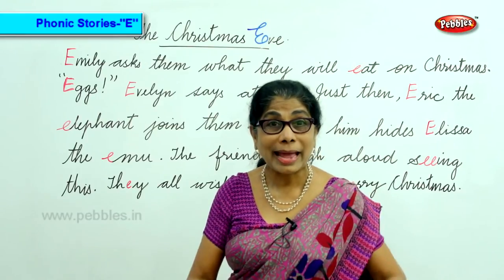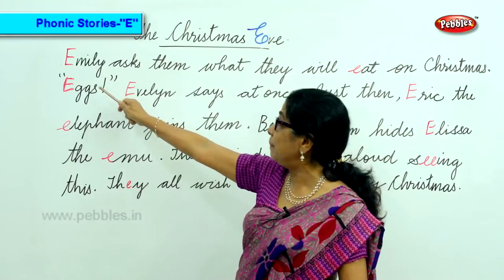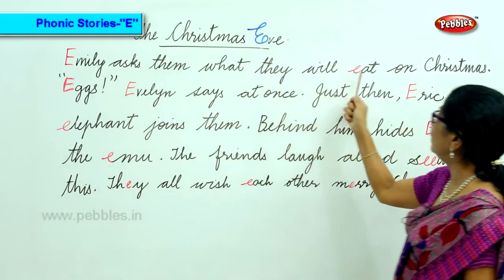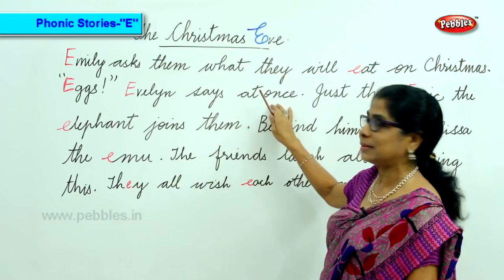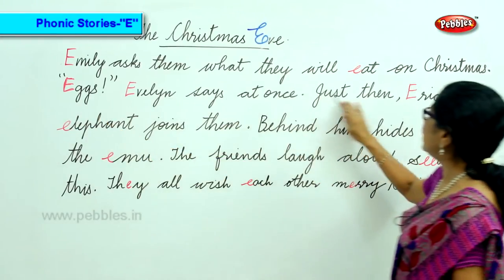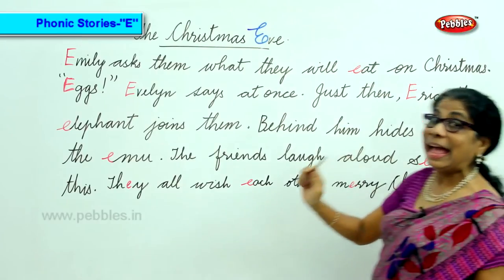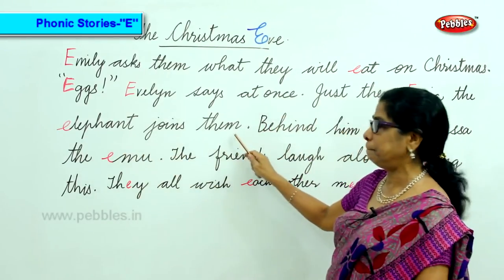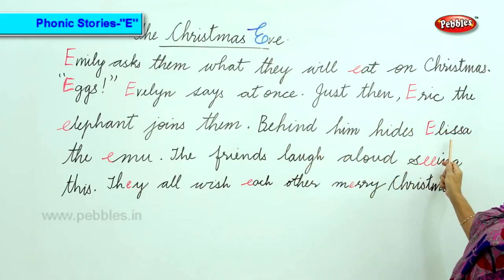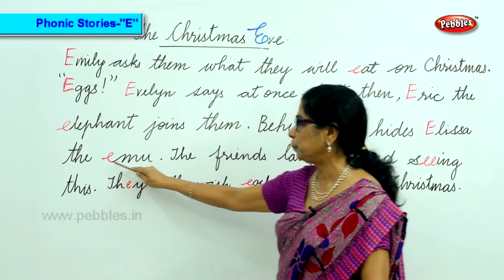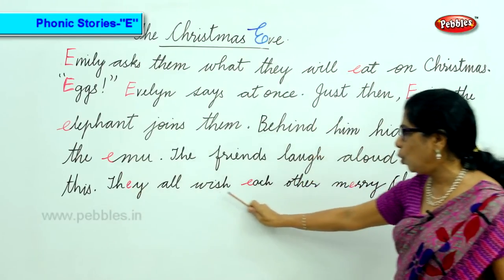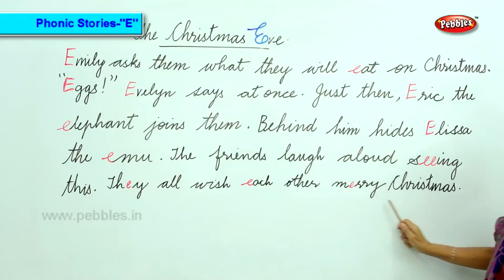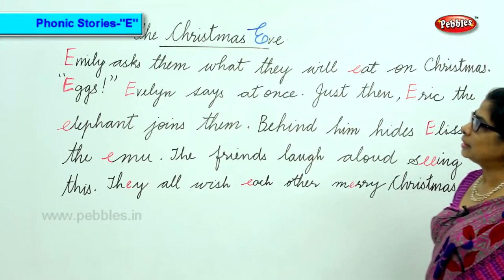Christmas Eve — the story continues, E sound. Emily asked them what they will eat on Christmas. Eggs, Evelyn says at once. Just then Eric the elephant joins them. Behind them hides Elsa the emu. The friends laugh aloud seeing this.